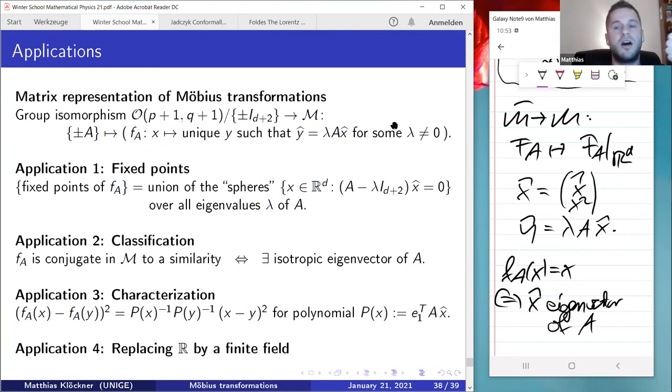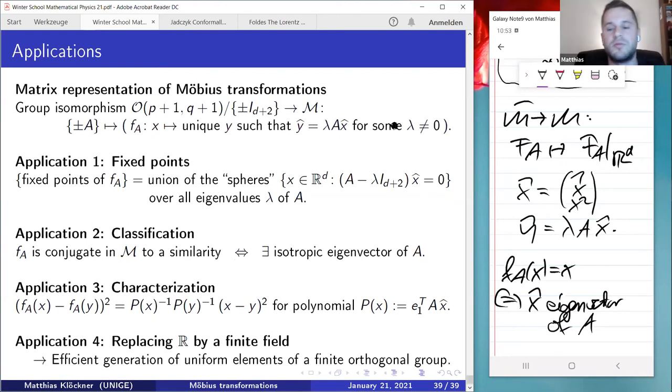It can be easily generalized to where we replace R by any field of characteristic other than two. So in particular, we could choose a finite field. In the fourth application, we replace the quadratic form by any non-degenerate quadratic form. And we get all the same results of this characterization. And for finite fields, there's even an obscure further application, because we can now write down in an easy way every element of a finite orthogonal group by the matrices corresponding to similarities and inversion in the Möbius group. And we get, I think, also a new result—a new way to efficiently generate uniformly chosen matrices in finite orthogonal fields. Thank you for listening. I think I'm done.